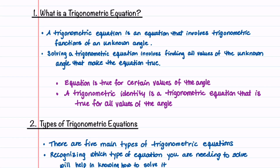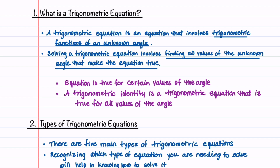A trigonometric equation is an equation that involves trigonometric functions of an unknown angle. Solving a trigonometric equation involves finding all values of the unknown angle that make the equation true. A trigonometric equation is true for certain values of the angle — this is in contrast to a trigonometric identity, which is true for all values of the angle.